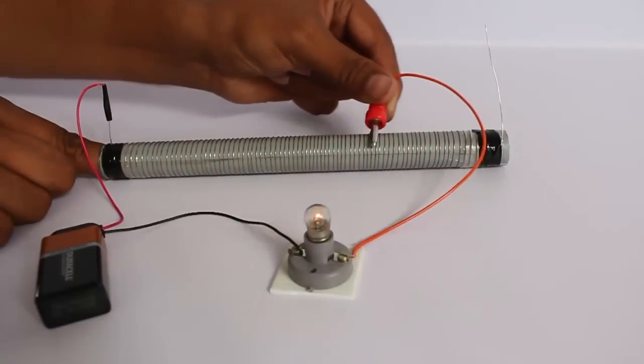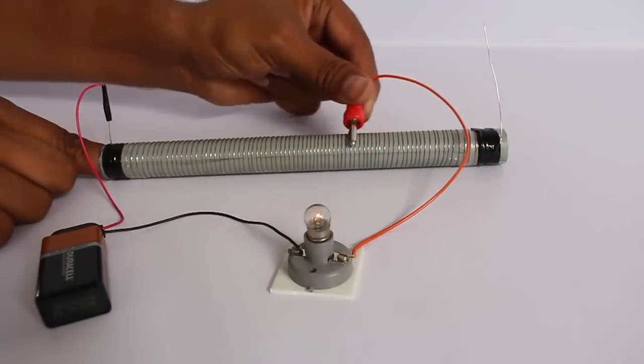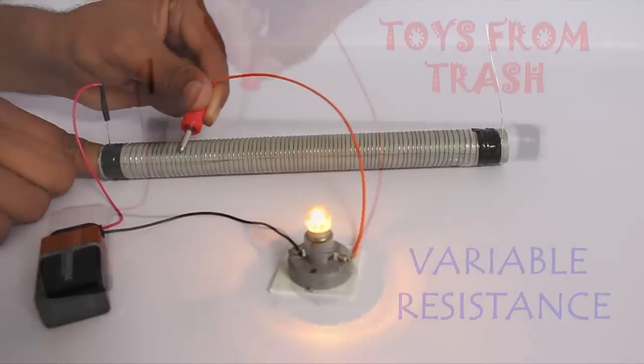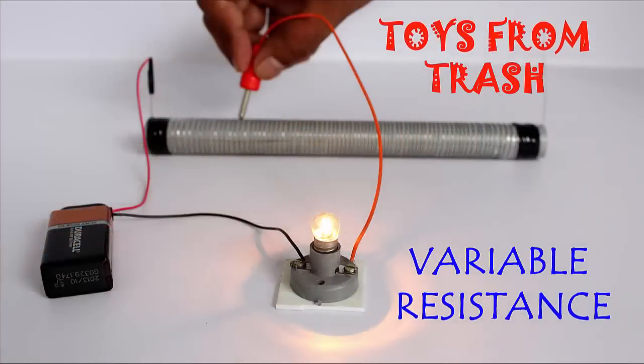We can all imagine that when current passes through a wire, the longer the wire, the more resistance it encounters, and so the less voltage is delivered to the load. We can understand this variable resistance through this very interesting setup.